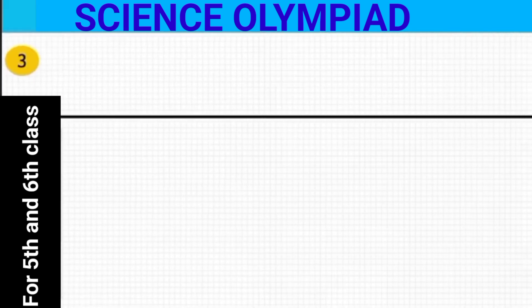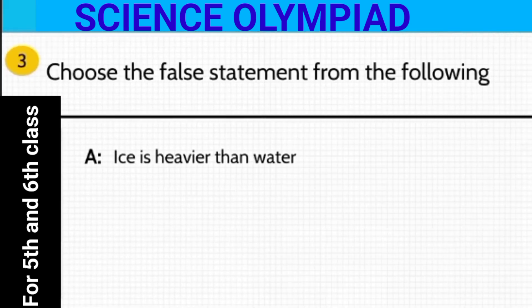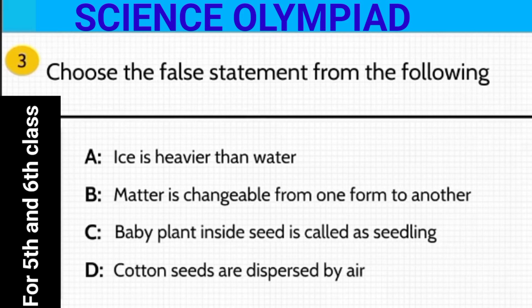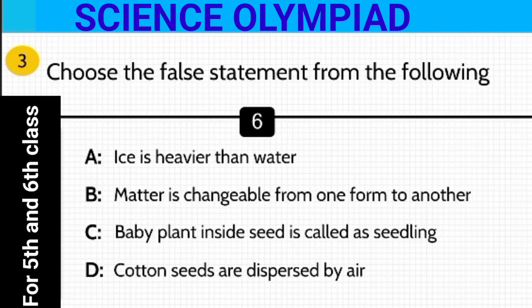Next question: Choose the false statement from the following. The statements are: ice is heavier than water; matter is changeable from one form to another; baby plant inside seed is called a seedling; or cotton seeds are dispersed by air. The false statement is that ice is heavier than water — this is wrong. Ice is lighter than water; that is why ice floats on water. The rest of the statements are true.